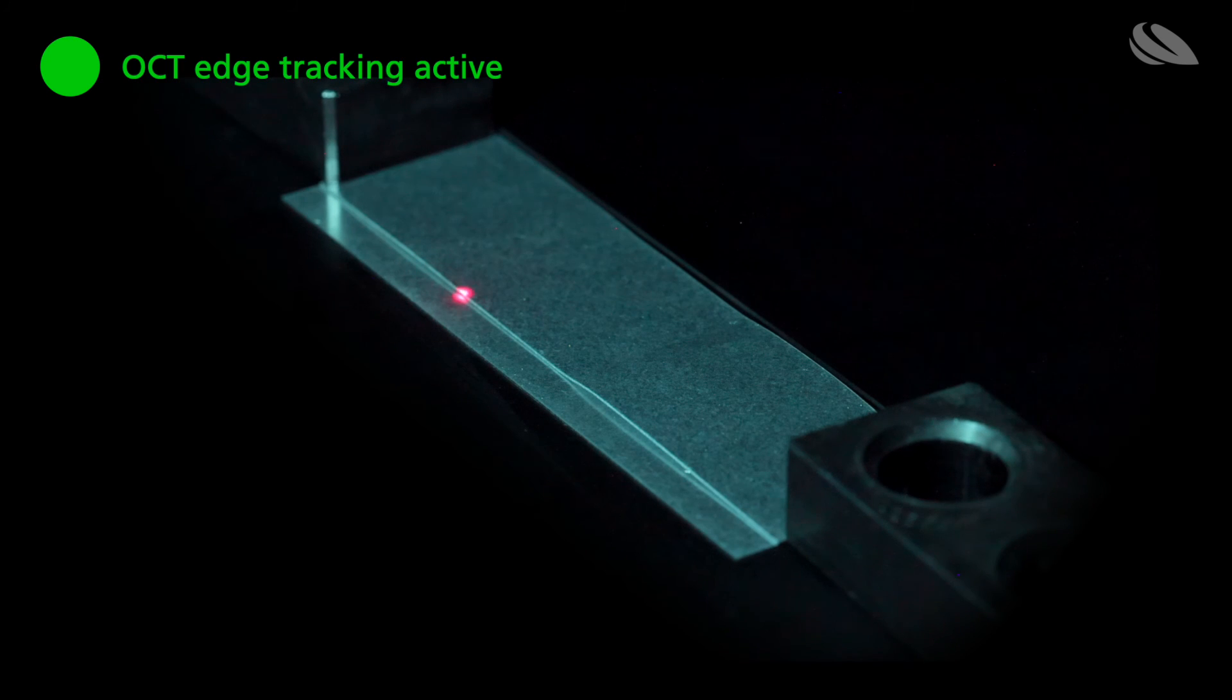The gap bridging algorithm can also vary the seam offset, laser power, or all parameters together. This way, a durable joint will bridge the detected gap.